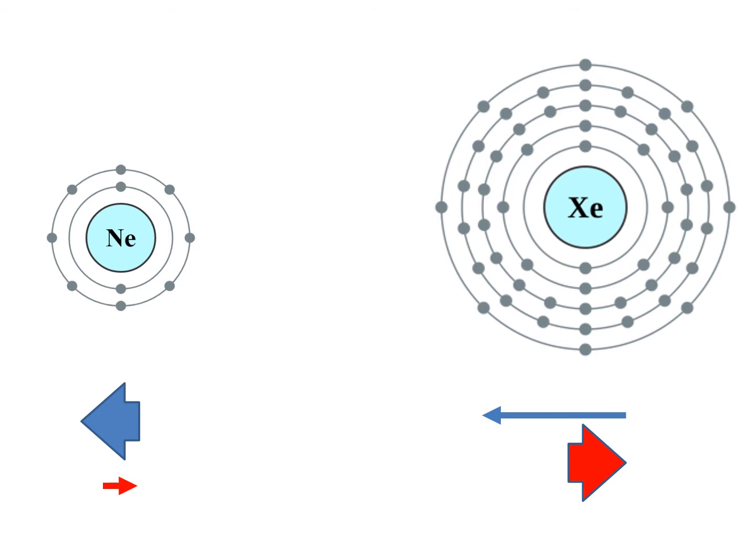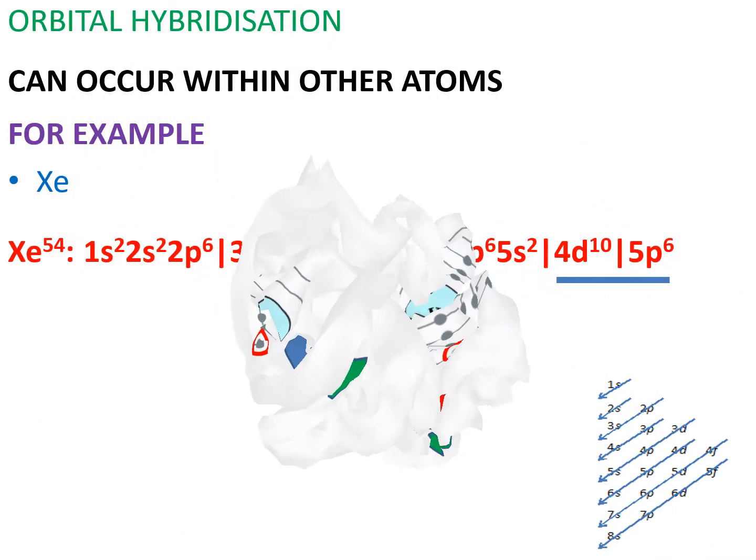The resultant effective nuclear charge experienced by valence electrons is much stronger in neon than it is in xenon, thus making it easier to remove an electron from an atom like xenon. However, we are not here to ionize xenon, we are here to hybridize xenon. When in ground state, it is clear that xenon will form zero covalent bonds.